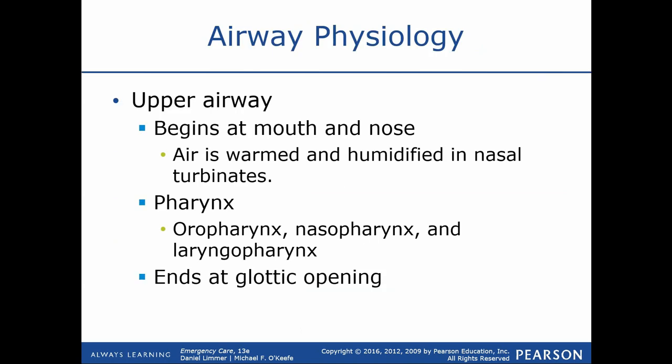Getting into the basic physiology: the upper airway is anything above the larynx or above the vocal cords within the throat itself. Below the larynx is considered the lower airway. We need to differentiate these because when we identify different types of airway sounds — things that sound abnormal — we need to determine if it's an upper airway sound, which we can typically address, or a lower airway issue that may need medication. The glottic opening is the opening to the trachea from the posterior pharynx, and that's the division between upper and lower airways.